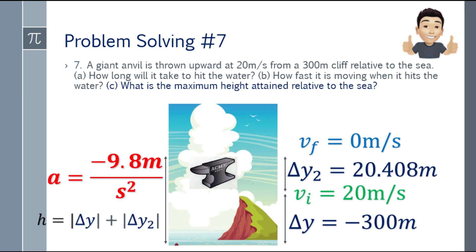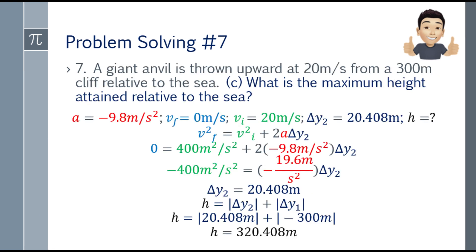Since the question asks for height relative to the sea, we add both distances: delta y₂ (20.408 meters above the cliff) plus the absolute value of delta y₁ (300 meters, cliff to sea). Height equals 20.408 plus 300 equals 320.48 meters. That is the maximum height attained relative to the sea.